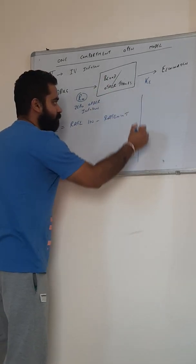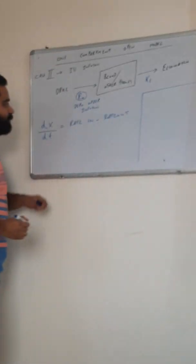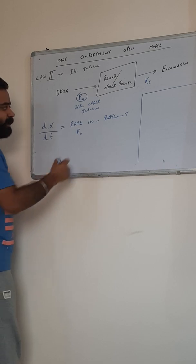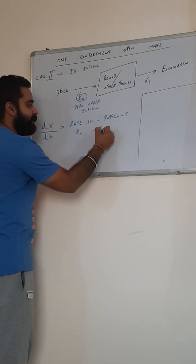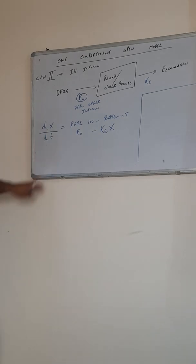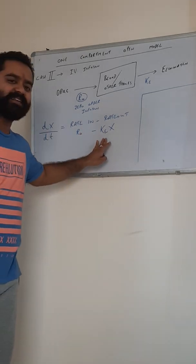In this case, rate in is given by R0 and rate out is given by KEX. So, DX/DT becomes R0 minus KEX.